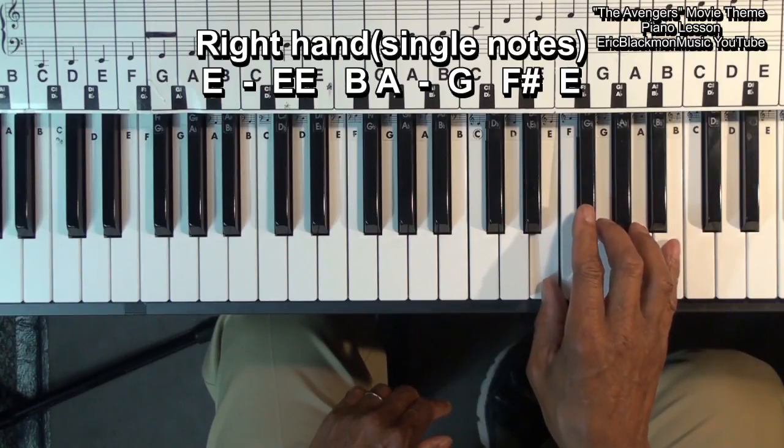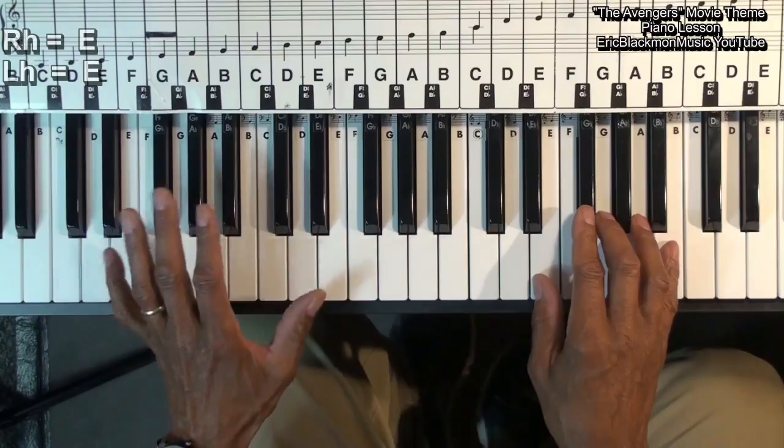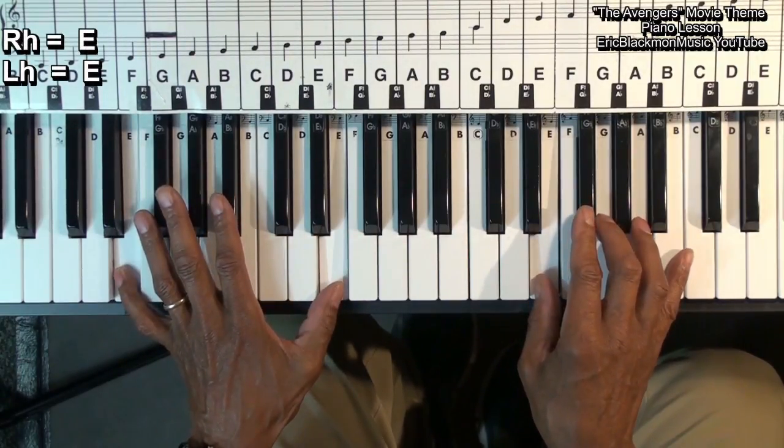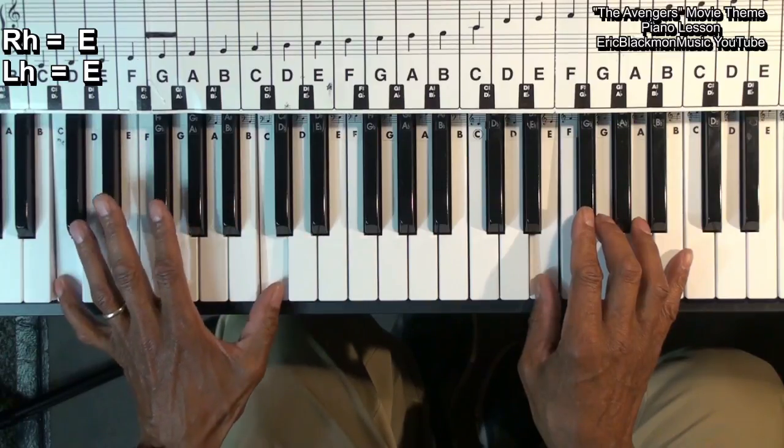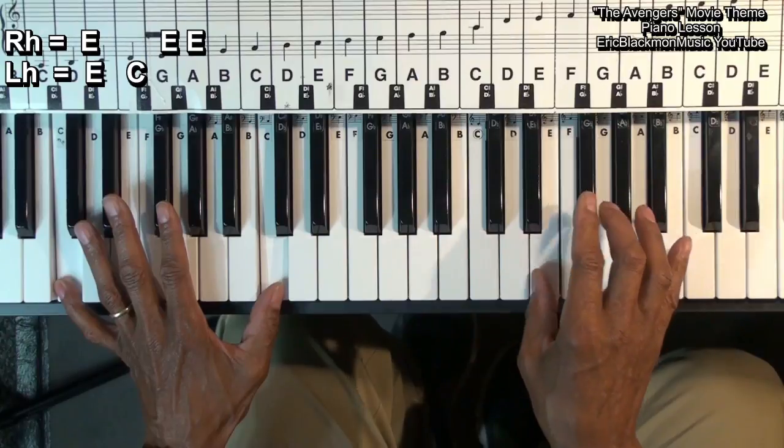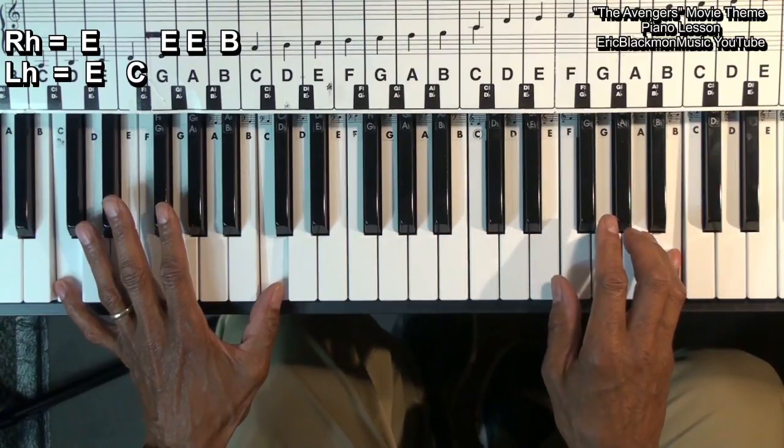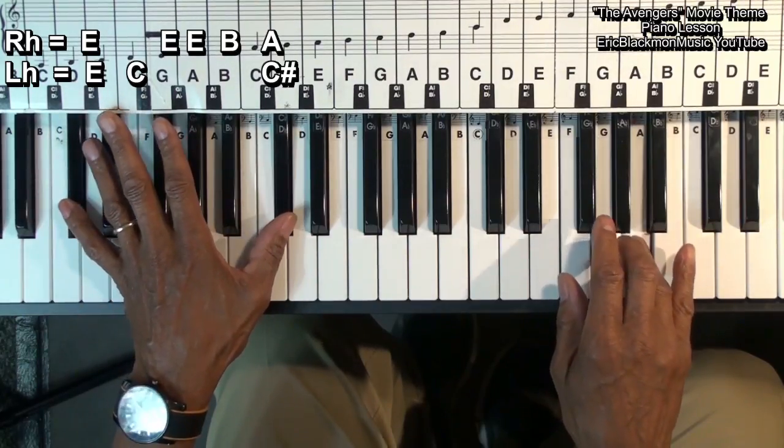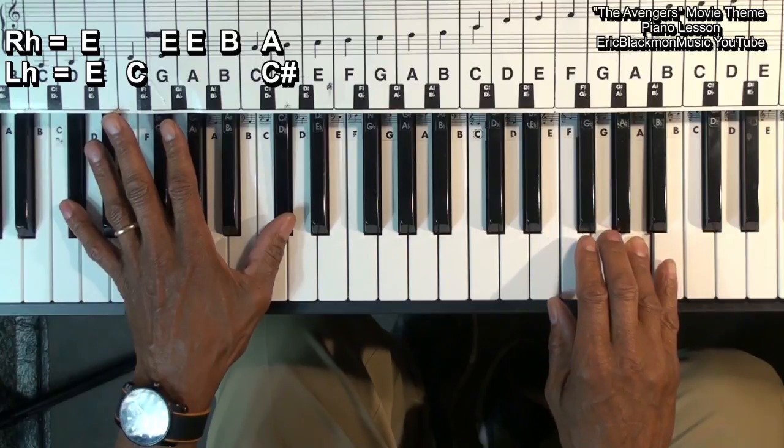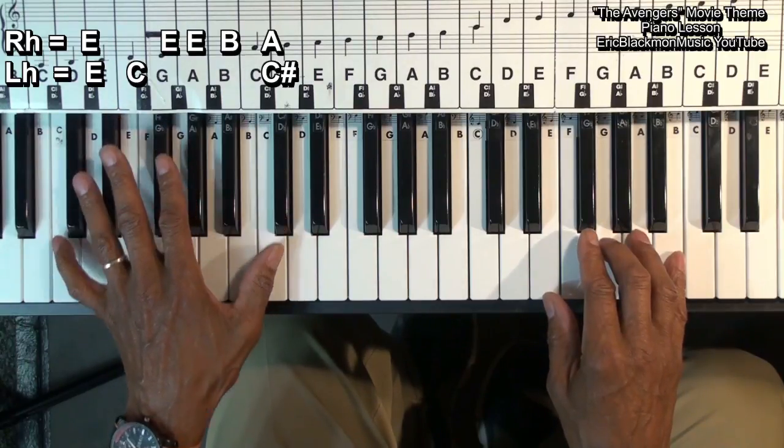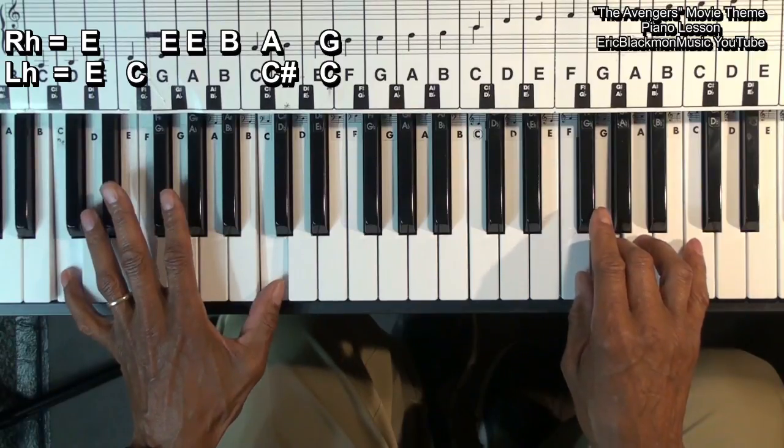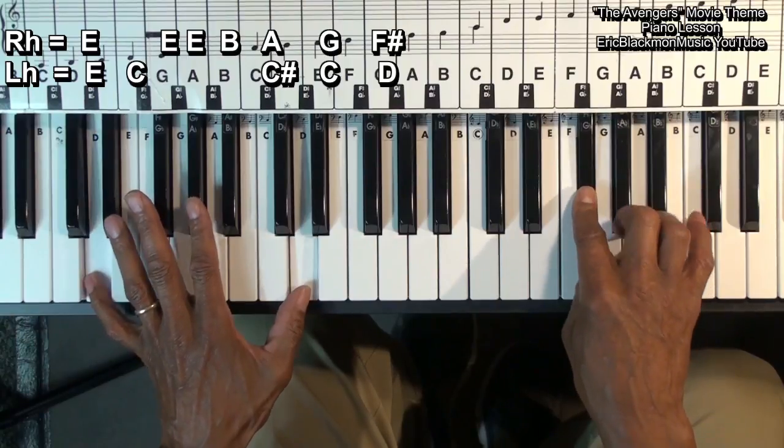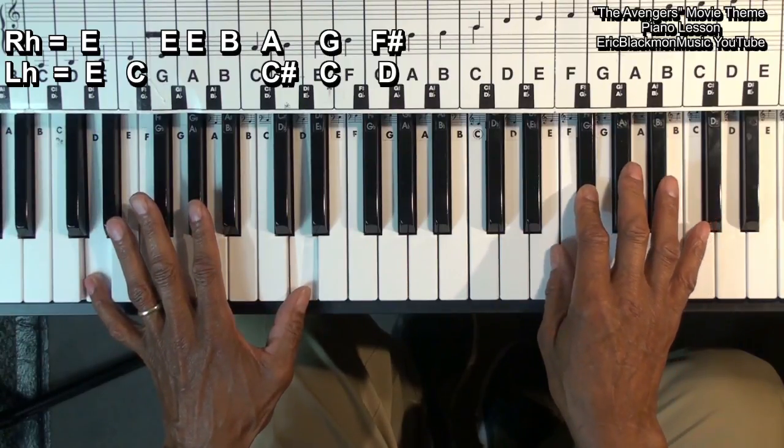And we'll repeat that melody. We'll start with E on the left and E on the right, down to C, two E's, B. And then to the A and C sharp on the left. Then we'll play C on the left and G on the right. And then D on the left and F sharp on the right. And then we'll come back to E.